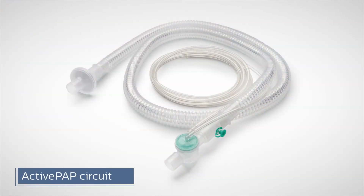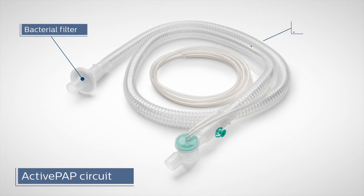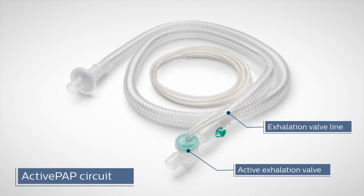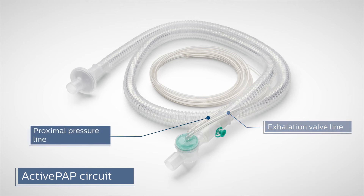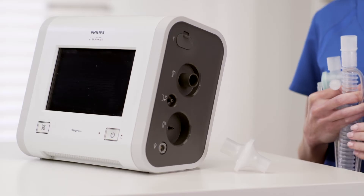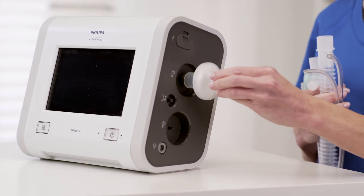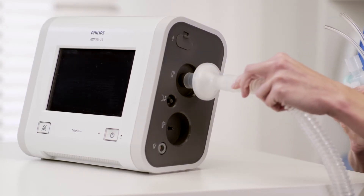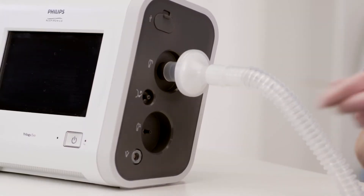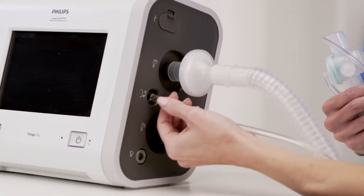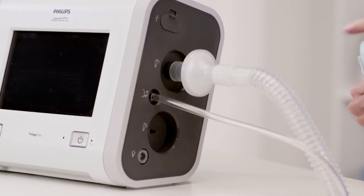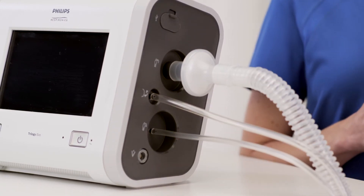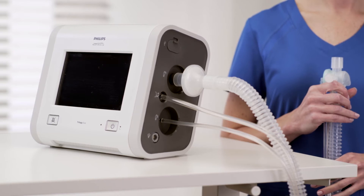The active PAP circuit consists of a bacterial filter, tubing, active exhalation valve, exhalation valve line, and the smaller proximal pressure line. Connect the bacterial filter and tubing to the inspiratory port. Now attach the proximal pressure line to the proximal pressure port and the active exhalation valve line to the active exhalation valve connection. The active PAP circuit is now complete.